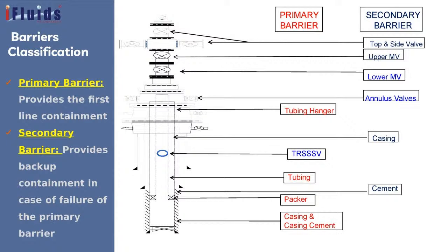In the graphical representation of primary and secondary barriers: the tubing hanger, tubing, packer, casing, and casing cementing are called primary barriers. The swab valve or crown valve (top valve), upper master valve, lower master valve, and annulus valves are secondary barriers. These annulus valves and casings are all secondary barriers.